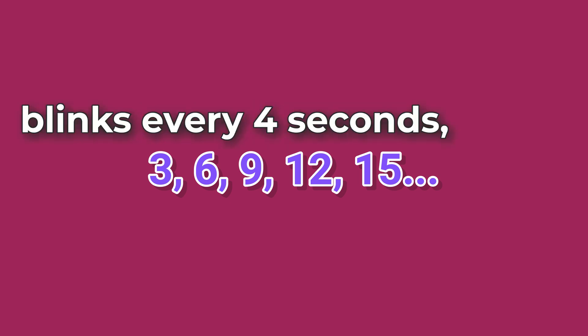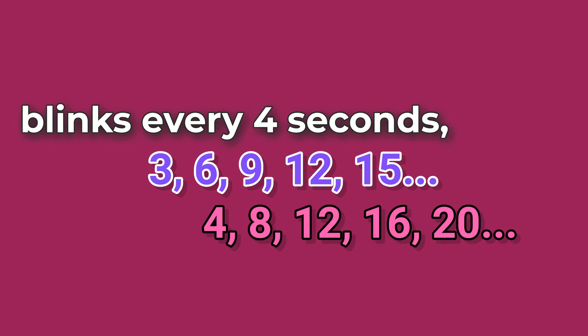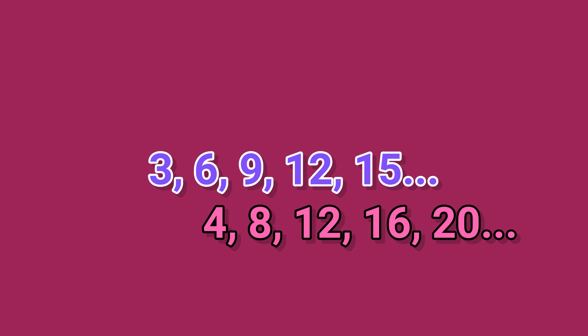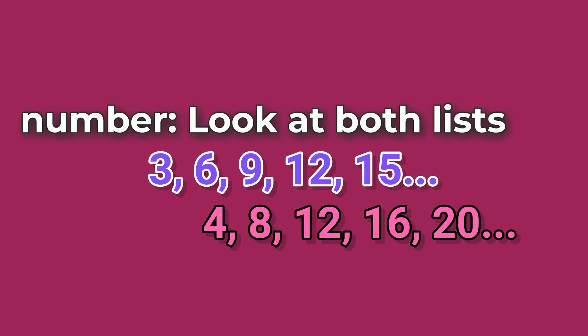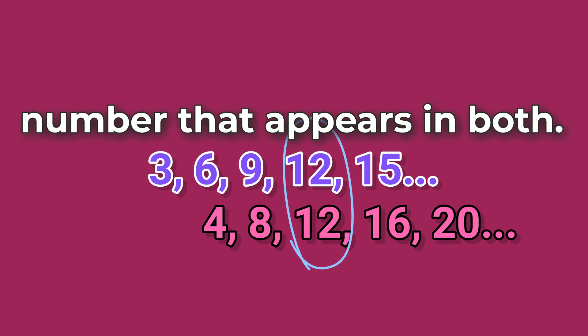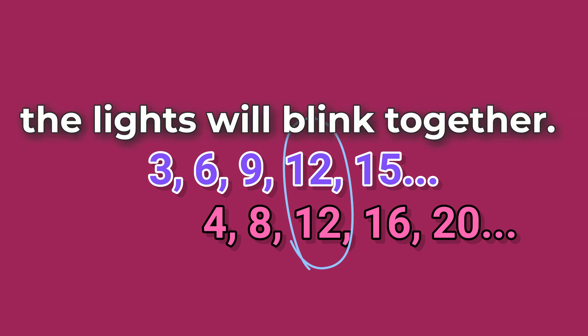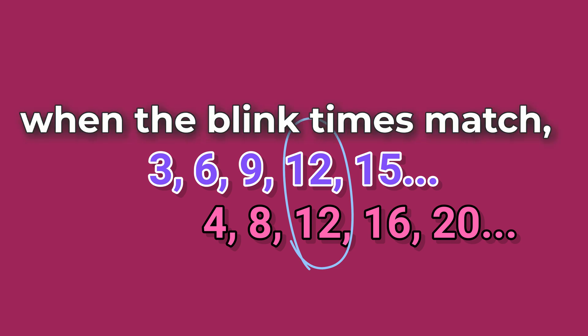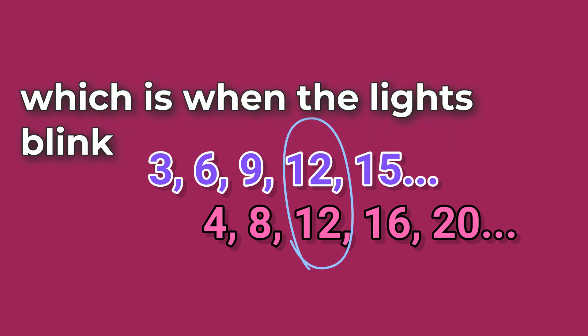If the other light blinks every 4 seconds, list its times like 4, 8, 12, 16, 20, and so on. Find the first common number — look at both lists and find the smallest number that appears in both. That number tells you when the lights will blink together. This method helps you see when the blink times match, which is when the lights blink at the same time.